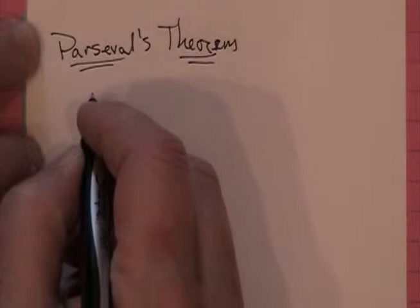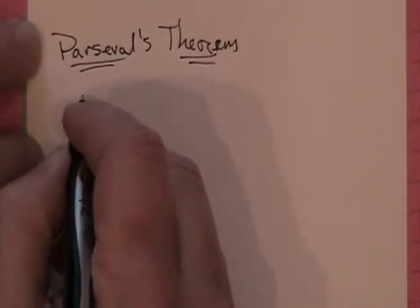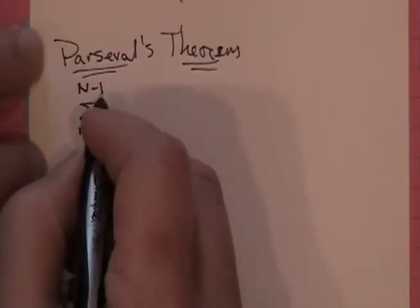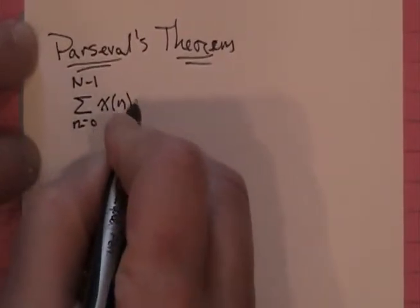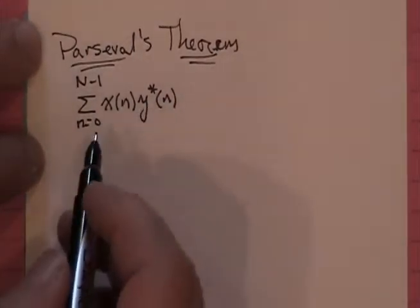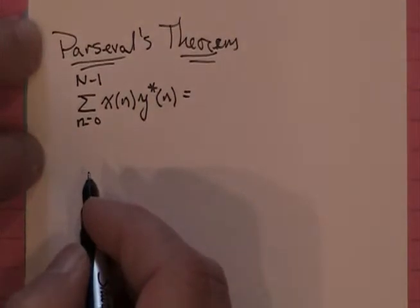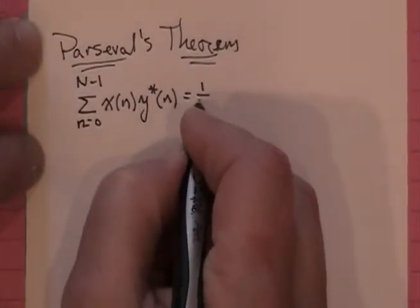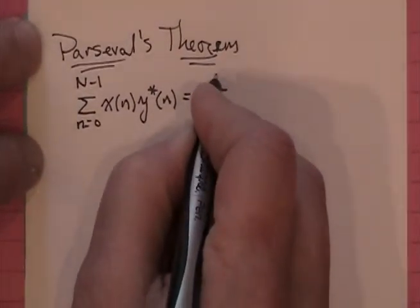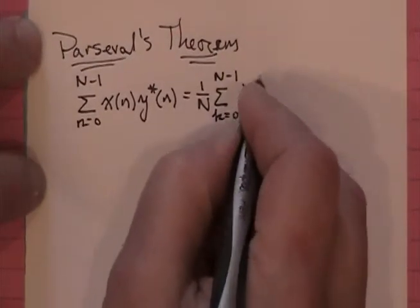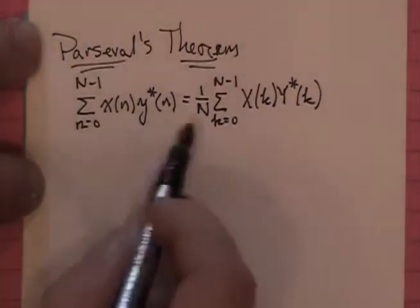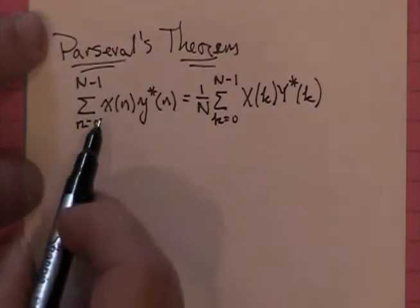I think we're going to leave the proof to homework. The generic form of Parseval's Theorem: I'm going to sum over values of n, assuming I'm summing over a single period of the waveform. I'll take a signal multiplied by the conjugate of a second signal — that ends up being a multiplication in the frequency domain as well, with a 1/N factor out front. Then summation over all frequencies: X of k times Y conjugate of k. So there's the generic form of Parseval's Theorem — we'll give you that as a homework problem for you to work out.